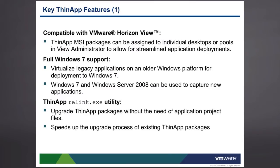There are some key ThinApp features to be aware of. The first is compatibility with Horizon View — ThinApp is designed to be packaged and launched from within Horizon View, and apps can be assigned individually or as a group to individual desktops or pools. There's full Windows 7 support, so legacy applications from older platforms can be brought over to Windows 7. As I move from one version of ThinApp to another, I can repackage an app without recapturing the whole thing. The ThinApp relink utility allows me to redo the runtime inside the bubble to update ThinApp packages and any licensing info.